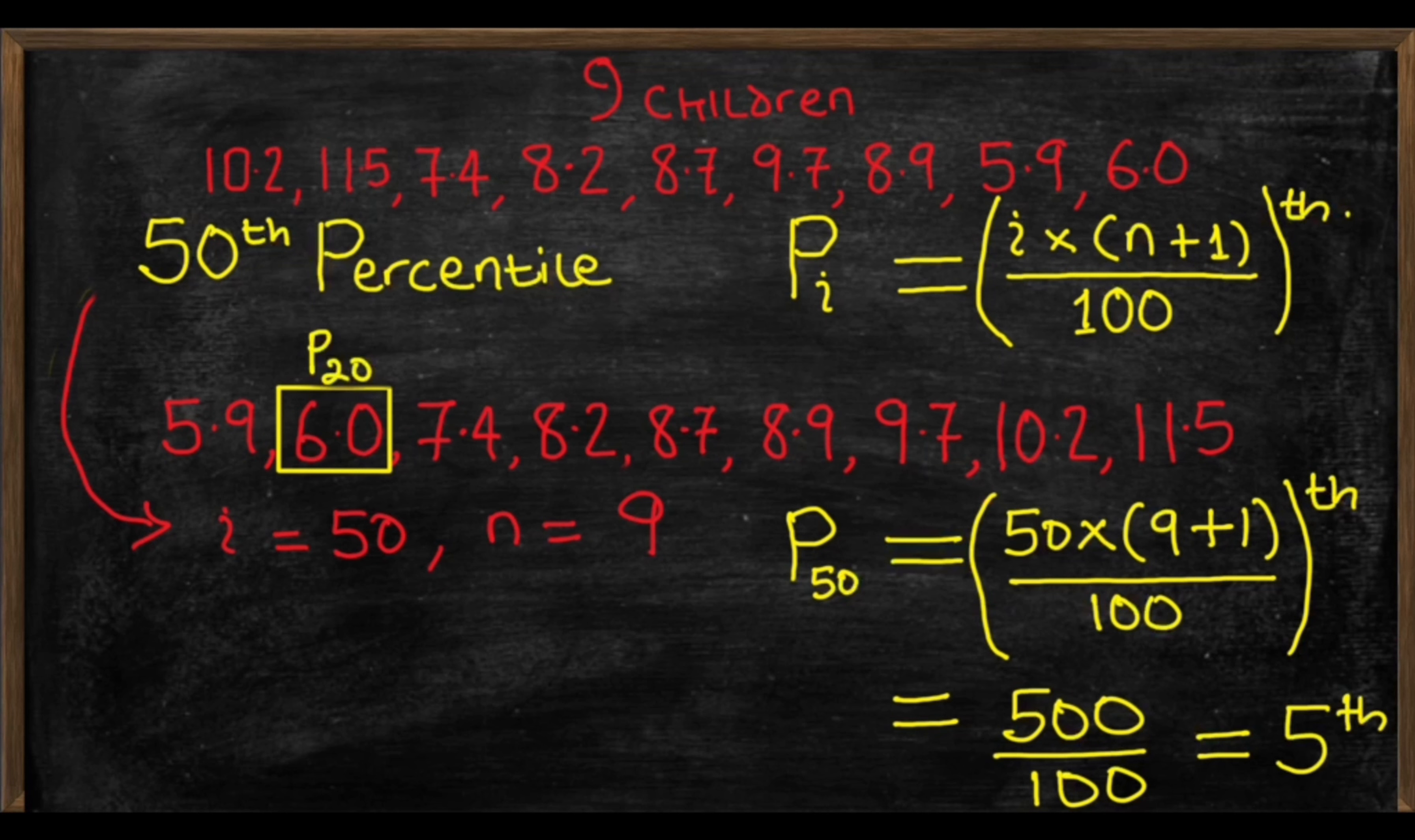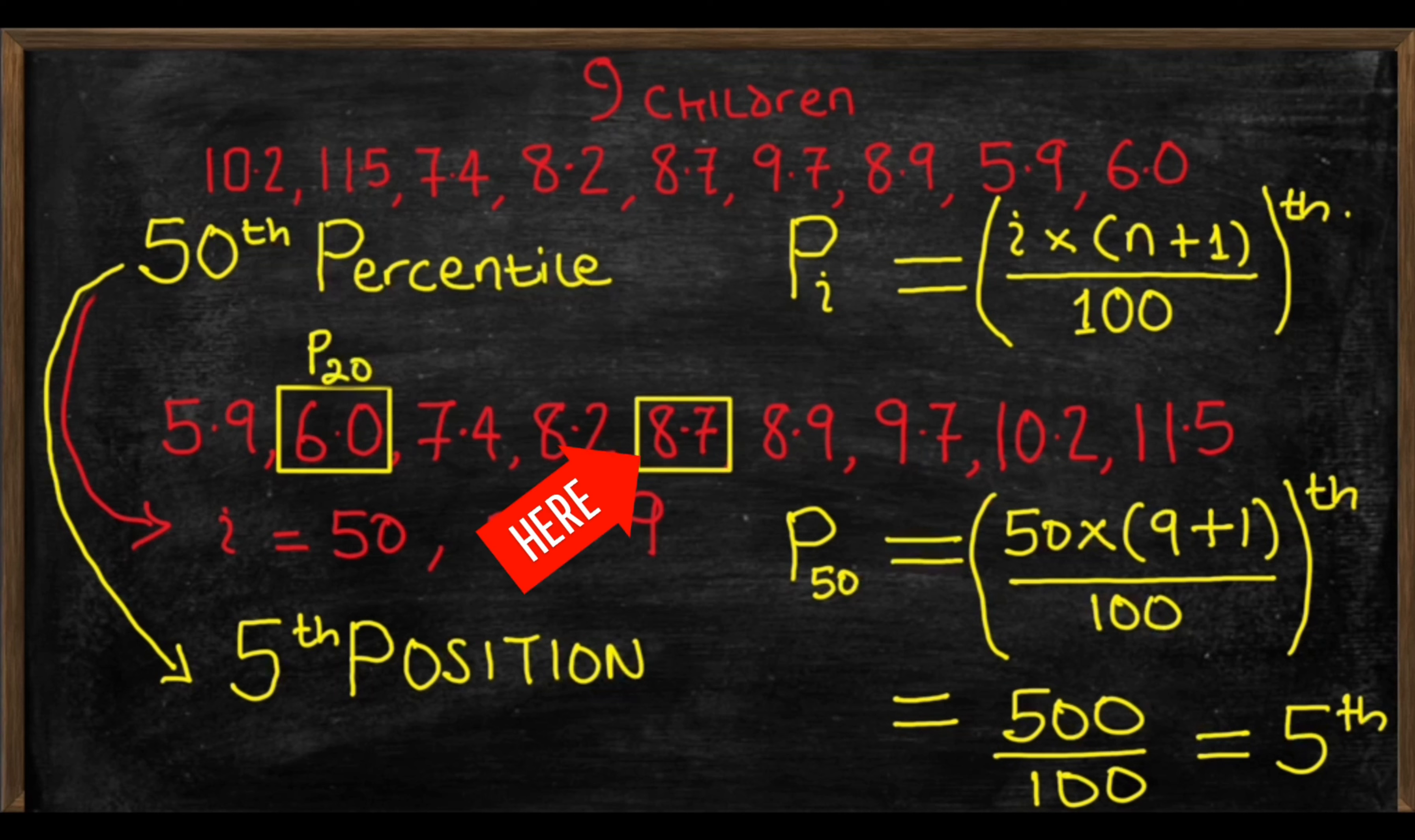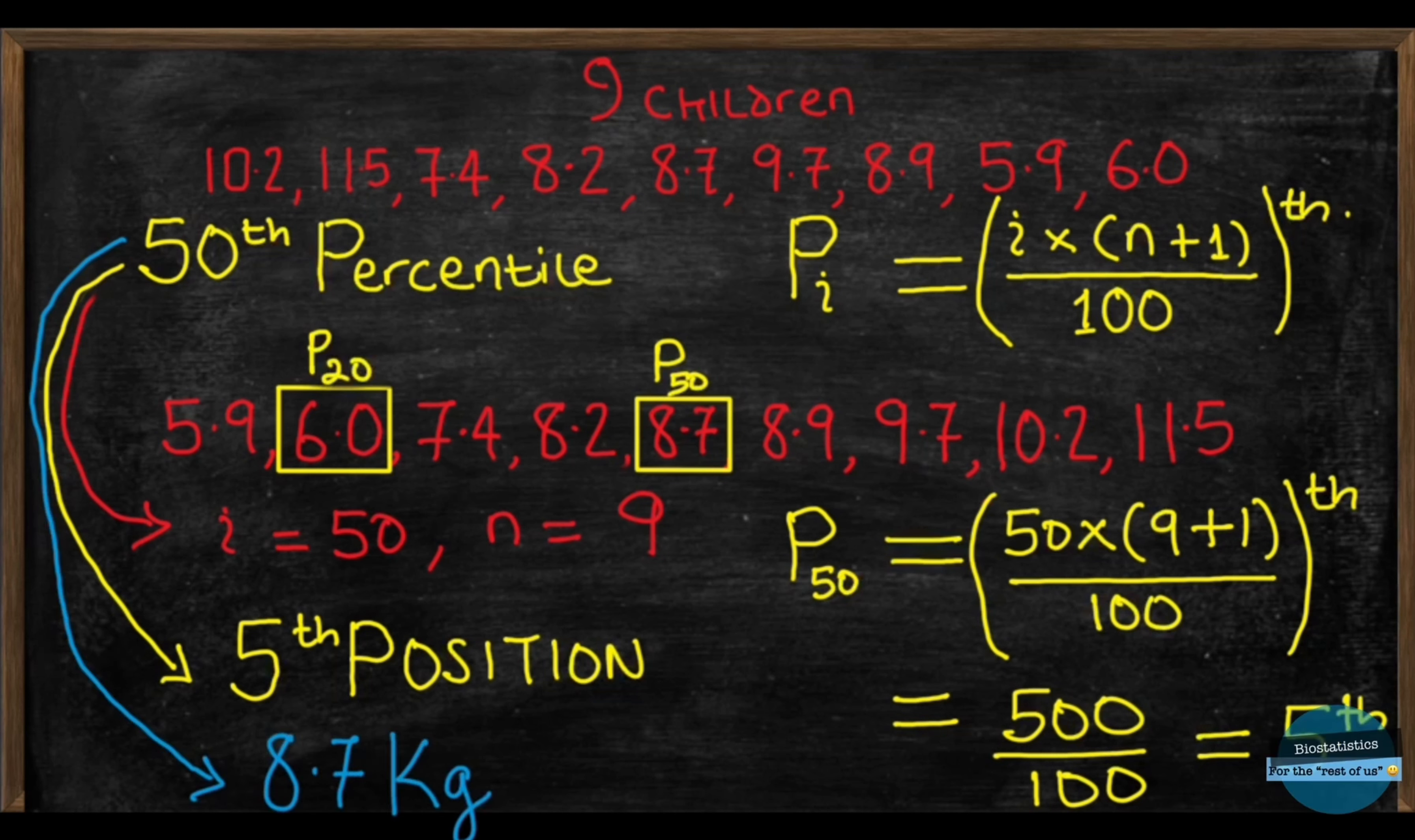So, our 50th percentile value lies in the fifth position. Looking at our sorted data, our fifth position is here. So, our 50th percentile value is 82 kilograms. Easy peasy.